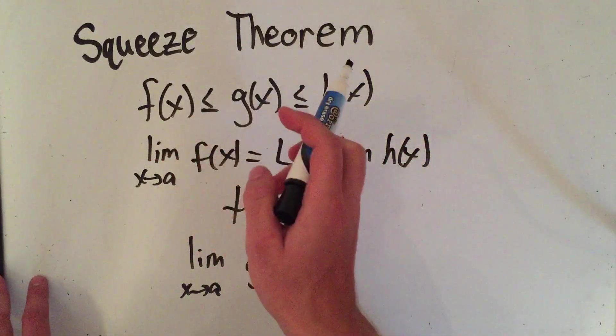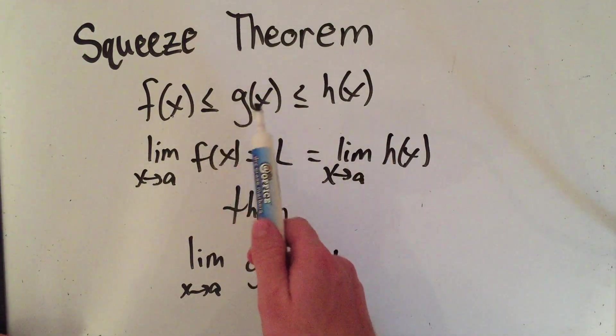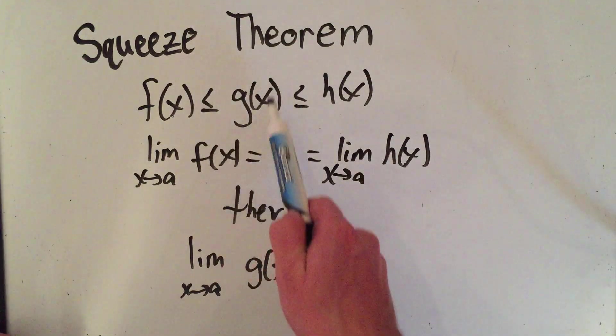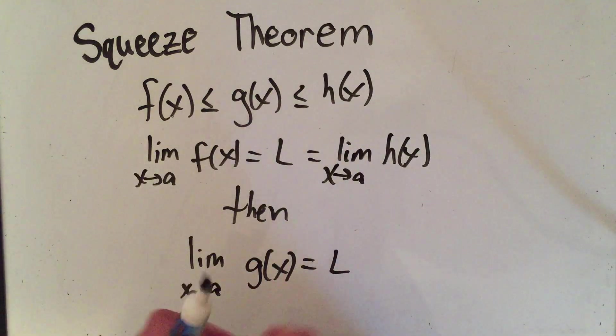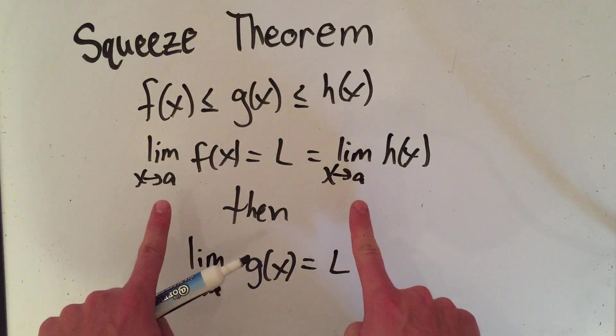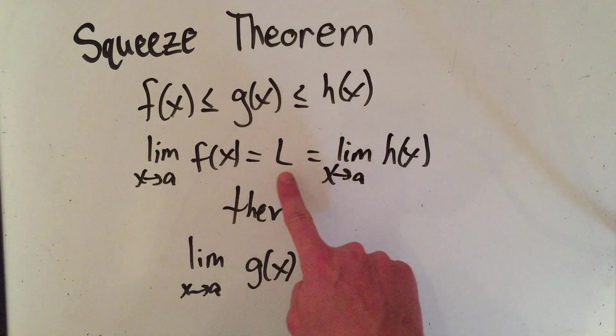Okay, talking about the squeeze theorem. The squeeze theorem for limits says that if you have a function g of x, and it's bounded on top by h of x, on bottom by f of x, and the limit as x approaches a of f of x and h of x equal the same limit,